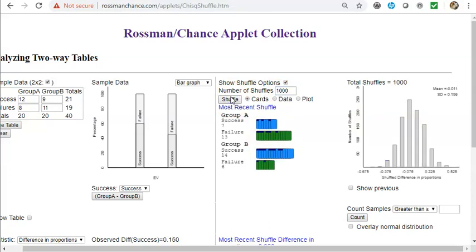Imagine shuffling your cards a thousand times, drawing 19 of them, figuring out the new difference of proportions, and doing that a thousand times, and then creating a graph. You see the computer took about a second.